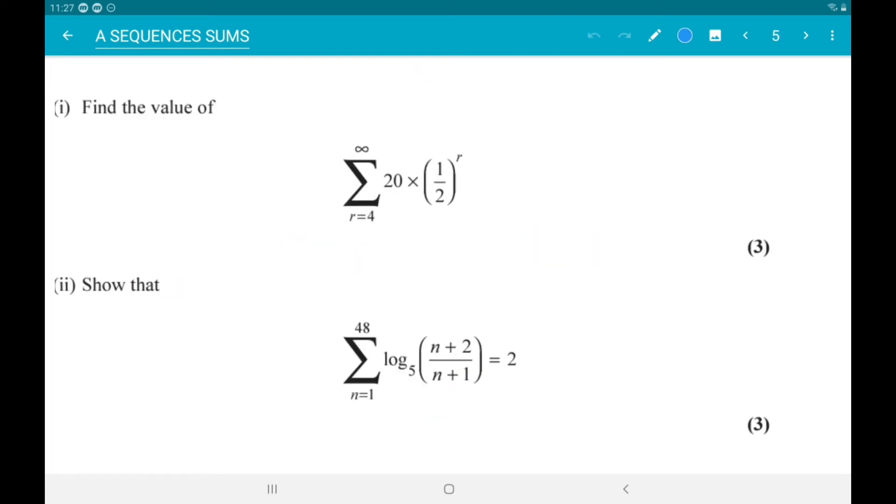Number two part one. Find the value of the sum from r equals 4 to infinity of twenty times one half to the power r. Alright, so this is geometric.